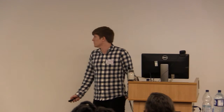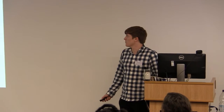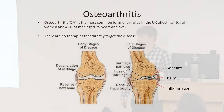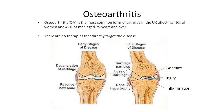Why are we examining the TGF-beta signaling pathway? What I'm most interested in is osteoarthritis. Osteoarthritis is the most common form of arthritis in the UK, affecting 49% of women and 42% of men aged 75 years and older. Osteoarthritis development is caused by the breakdown of cartilage that sits in between the joint and protects bone from rubbing together.